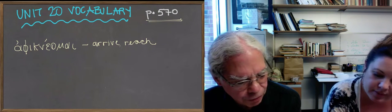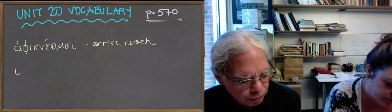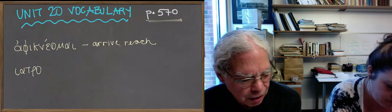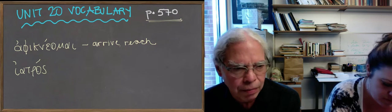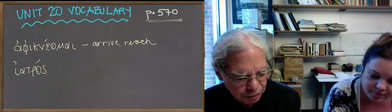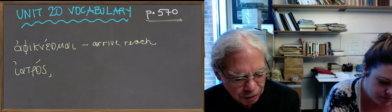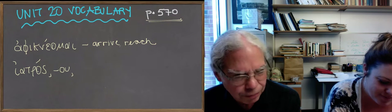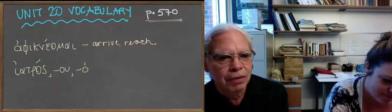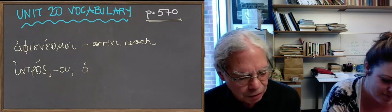We've got the word for healer, translates the word iatros, iatrua, a second declension masculine noun, as doctor, which is an exaggeration, means a healer. There are no doctors in the scientific sense in ancient Greece.